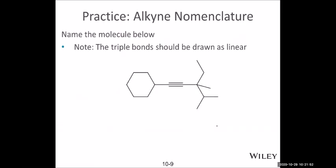Now naming this compound — this is actually not something we commonly see in examples. If we are to name it, we can either pick the longest chain and name it, but this has a problem because it has a cyclohexyl group, and this part is very big. The easier way is to name it based on acetylene, treating the acetylene as the center.